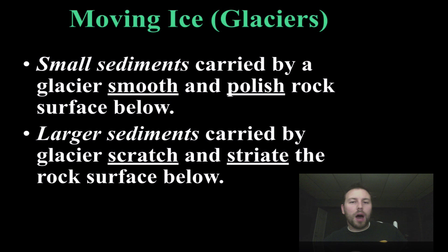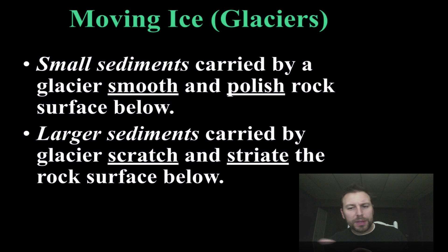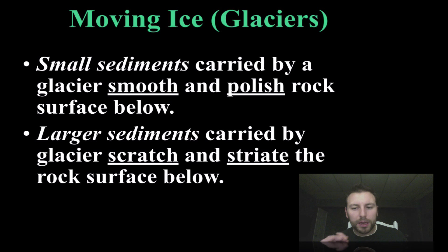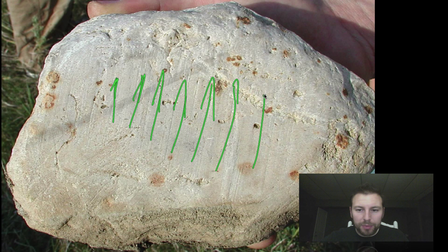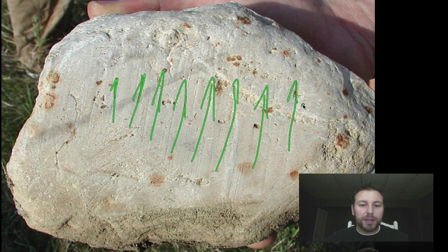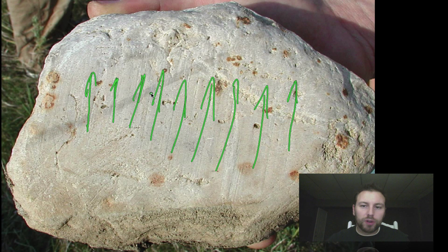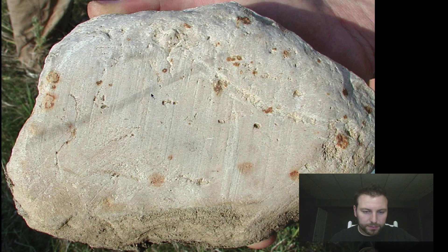With moving glaciers, there are a number of features we're going to see. Small sediments carried by glaciers get smooth and polished, similar to what we see from rivers. Larger sediments get scratched and striated — striations are the little grooves we see on rocks. If you notice, it looks like the rock was dragged along the ground, because that's exactly what happened. These glaciers are so big they can scrape rocks along the ground — much like sliding into a base or falling off your bike and getting those parallel scratches.